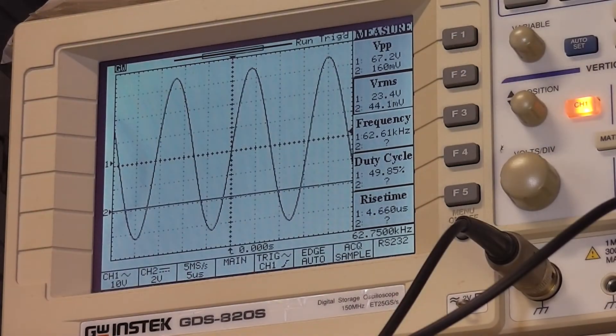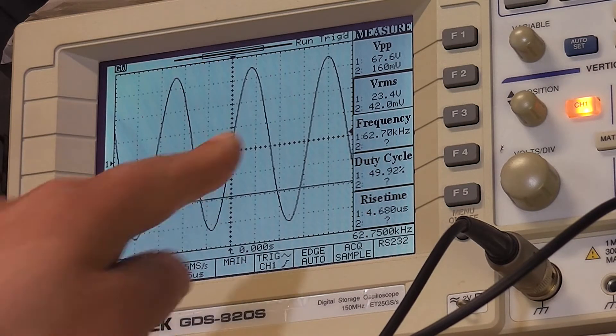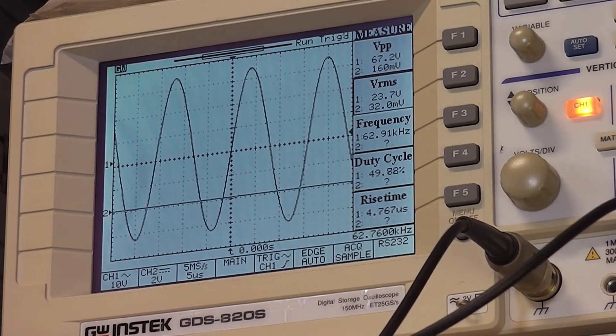Just looking across the erase head, it says it should be between 50 and 70 kilohertz. I've got 62, and we've got 23 volts RMS, and it should be at least 15. So the bias oscillator looks nice and healthy.